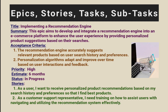Acceptance criteria example: the recommendation engine accurately suggests relevant products based on the user's search history and preferences. Personalization algorithms adapt and improve over time based on the user's interactions and feedback. Then comes priority — I have taken an example of a high priority epic. Estimate: 6 months. Status: in progress.